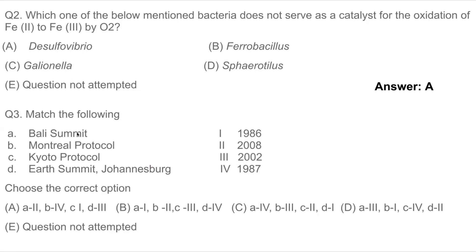Question 3: Match the following — Bali Summit, Montreal Protocol, Kyoto Protocol, Earth Summit, Johannesburg. Looking at the set of options, B should be matched with 4 because the Montreal Protocol, which was made for ozone-depleting substances phase-out, was in 1987. So let's look at the option in which B is matched with 4 — that is option A.